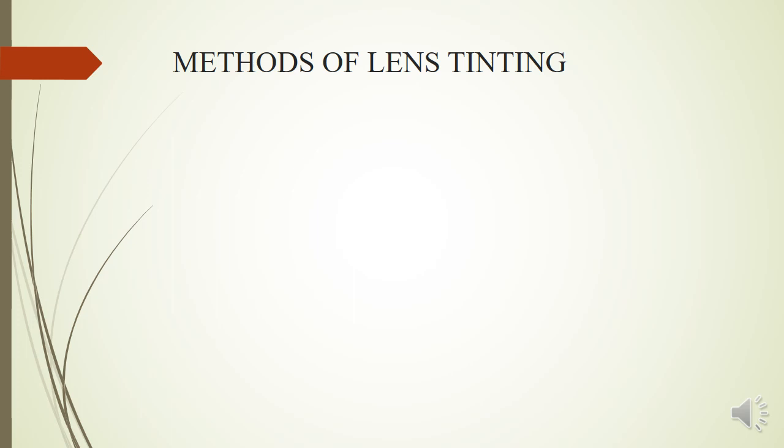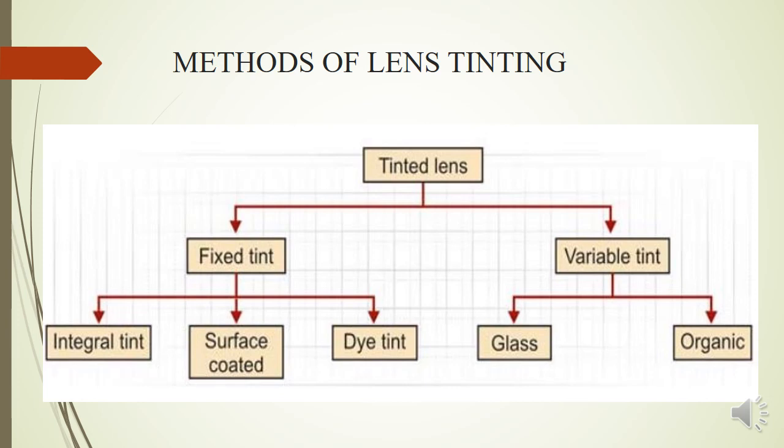Now, what are the methods of tinting used to produce tinted lenses? There are two broad categories: fixed tint and variable tint. A fixed tint means the color is present irrespective of the conditions — it does not change in percentage or lightness. A variable tint refers to photochromic lenses, which change their tint depending on exposure to light or the environment. For fixed tints, three techniques are used: integral tint, surface coated tint, and dye tint.